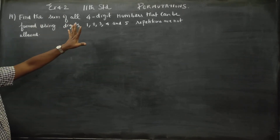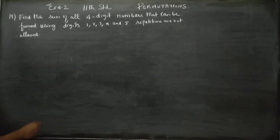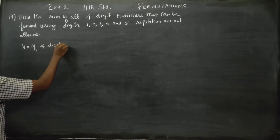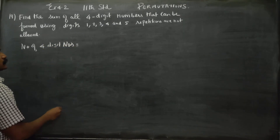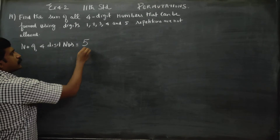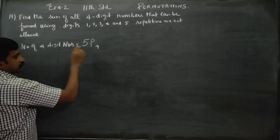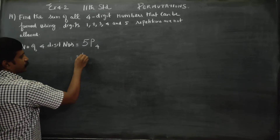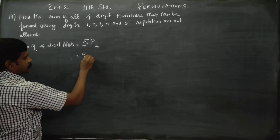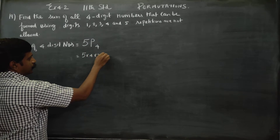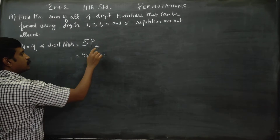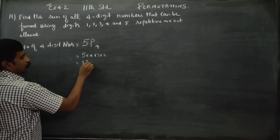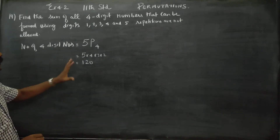Number of 4-digit numbers is equal to 5P4. That is, 5P4 = 5 × 4 × 3 × 2 × 1 = 120 numbers total.